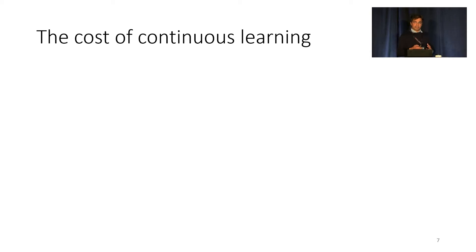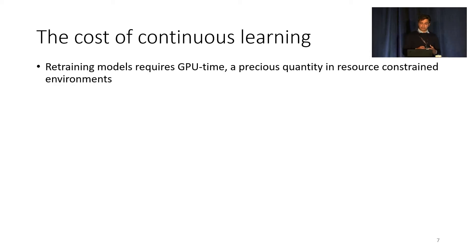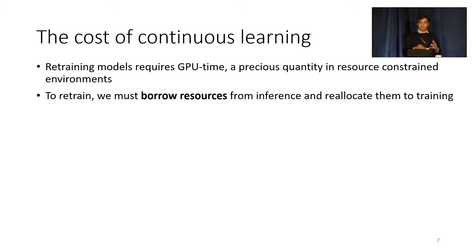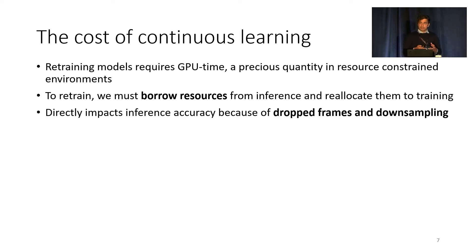However, doing this retraining has an associated cost. It requires precious GPU time to train a model in parallel while inference is simultaneously running on the same GPU. This is even more challenging in resource-constrained environments because the GPUs are already running inference jobs from other video streams. In such environments, the retraining job must borrow resources from inference to complete retraining. This resource borrowing causes inference jobs to lose some accuracy because they must start dropping frames or downsample their inputs to keep up with the line rate.